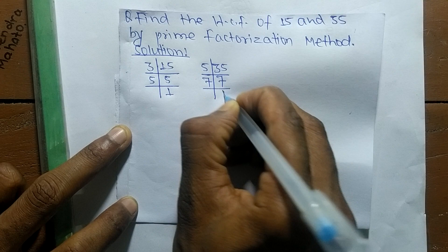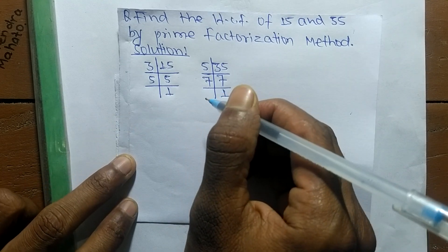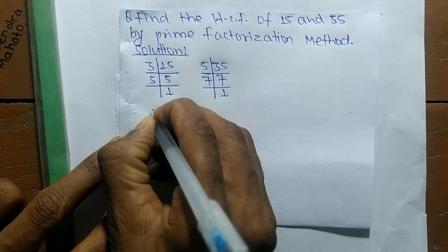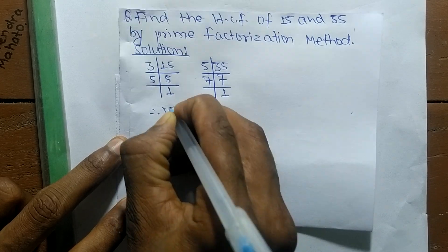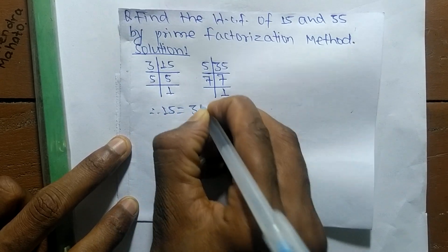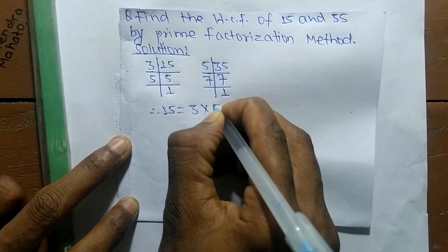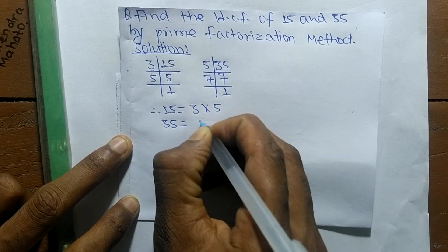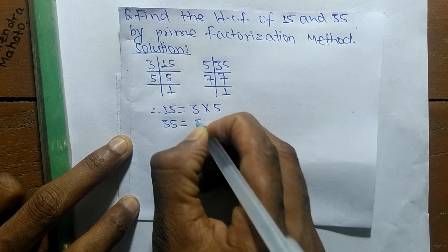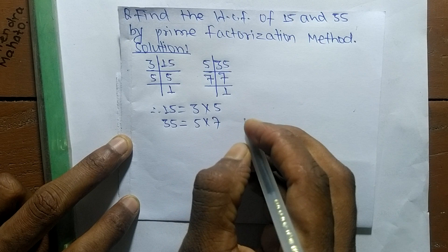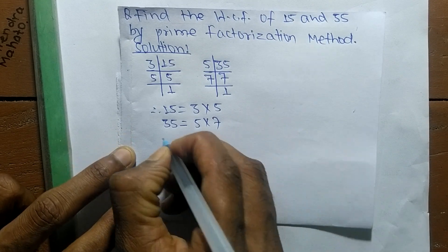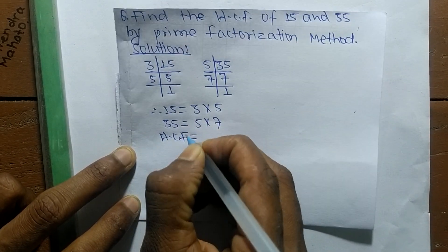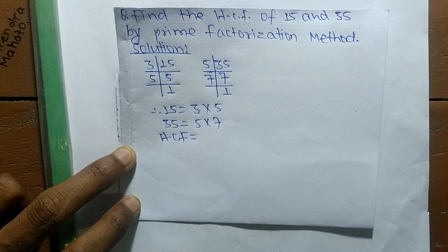And 7 times 1 equals 7. From these prime factors we can write: 15 is equal to 3 times 5, and 35 is equal to 5 times 7. So now we have to find the HCF.